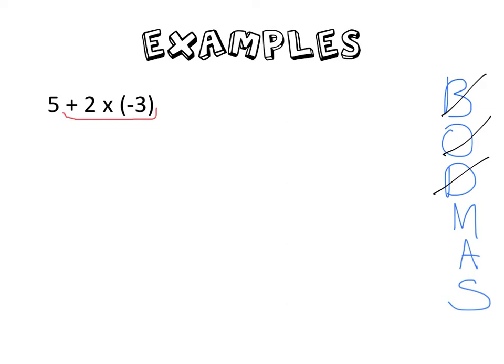If that's a positive 2 times by a negative 3, 2 times 3 is 6. And I've got a positive and a negative so my answer becomes a negative. And it becomes 5 minus 6. 5 minus 6 is negative 1.